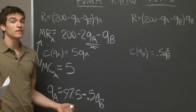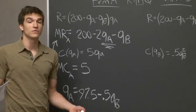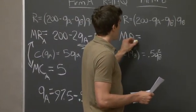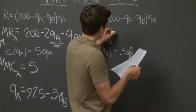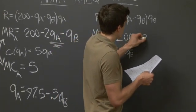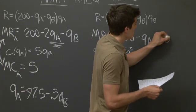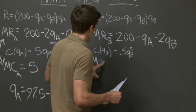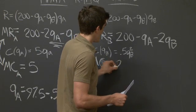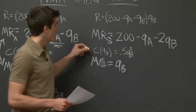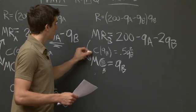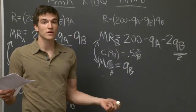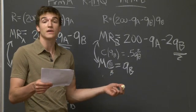We're going to repeat this same process for firm B, but we take the derivative with respect to QB instead of QA. The marginal revenue for firm B is equal to 200 minus QA minus 2QB. The marginal cost for firm B is equal to QB. Setting marginal cost equal to marginal revenue and solving for QB gives us firm B's reaction curve.